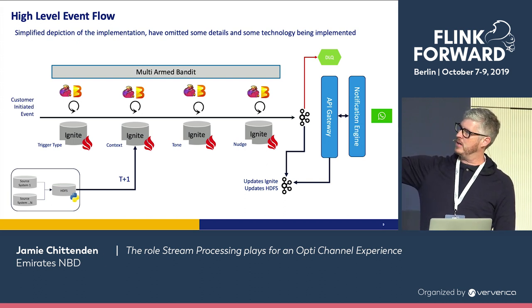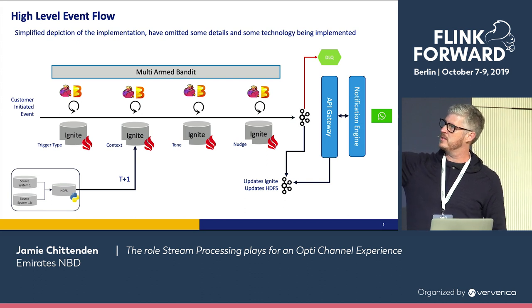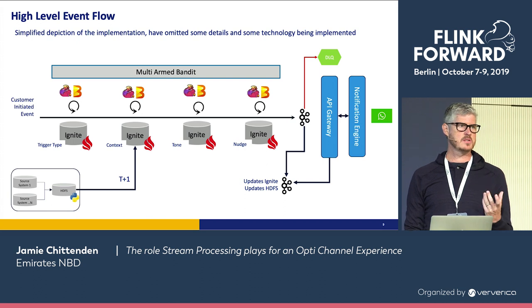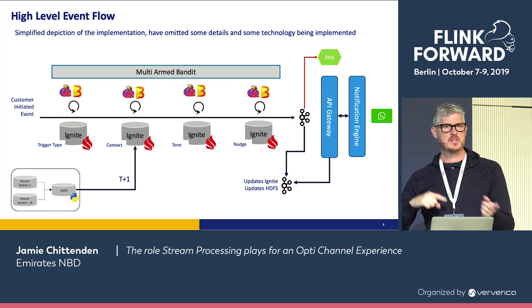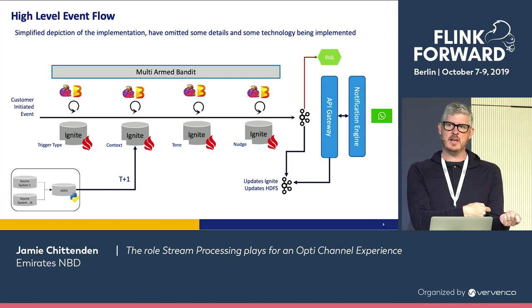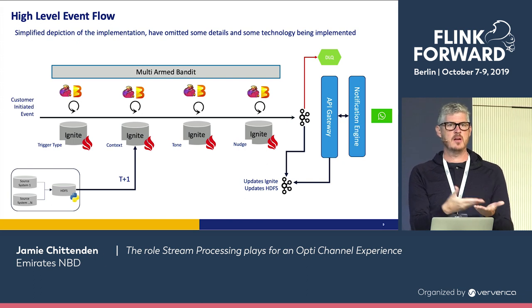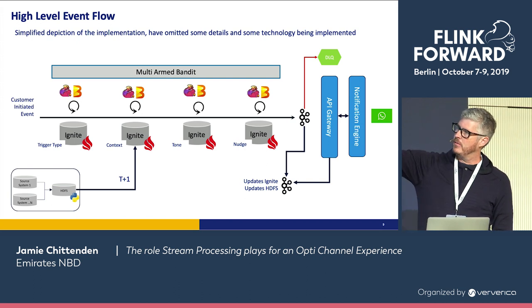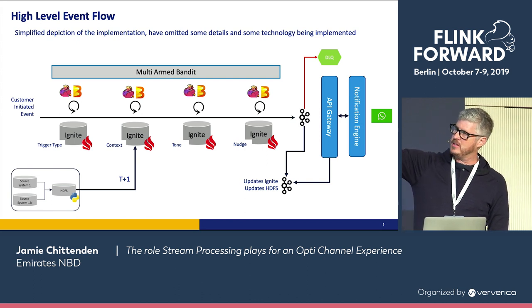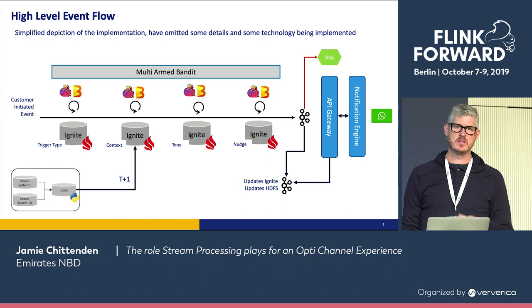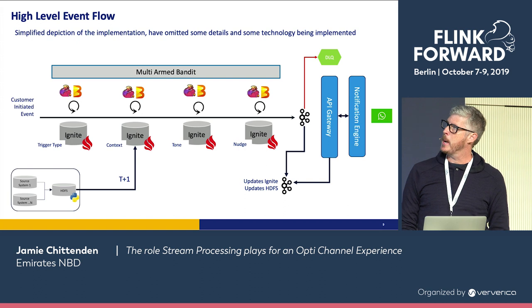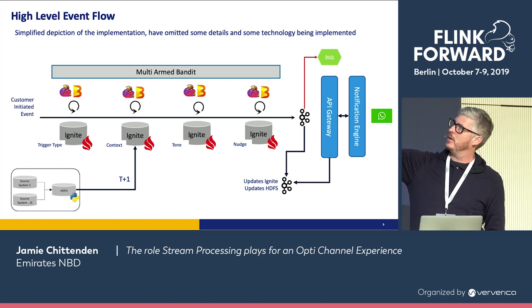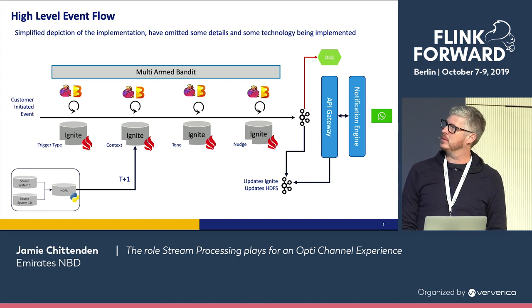The multi-armed bandit doesn't care about opt-outs, so we do some analysis on those opt-outs from a CRM system — just a very small lookup file. Then it goes to the gateway, then to the notification engine and gets posted into WhatsApp. Then it comes back in again and updates Ignite. It also updates HDFS because we need to understand for historical purposes that this nudge was sent out, this nudge was actually used, and this nudge is now in a business-final state so we can't send it out again. Historical data in HDFS is coming from the source systems — payment systems, ATM systems, treasury systems.